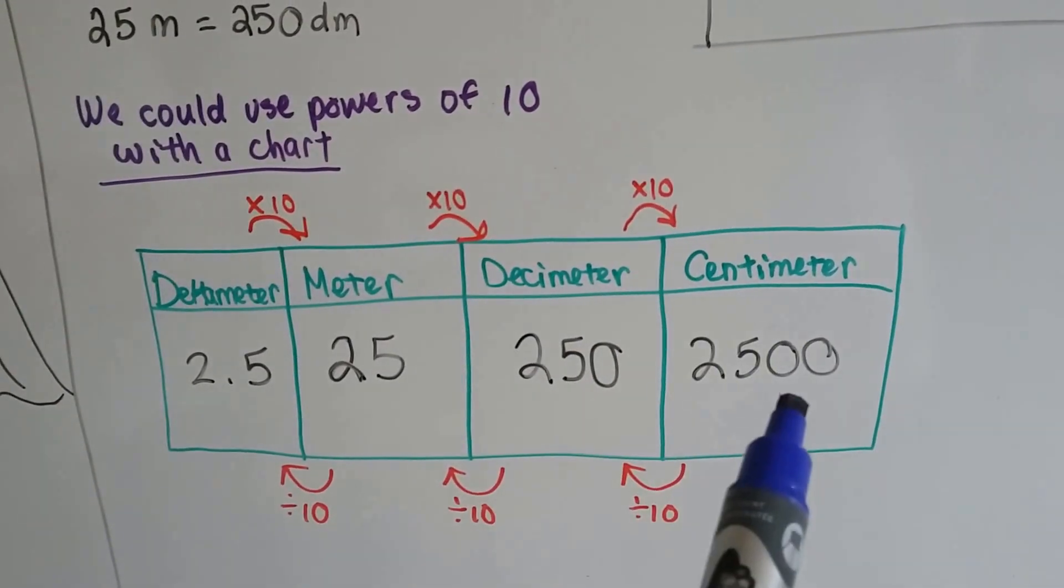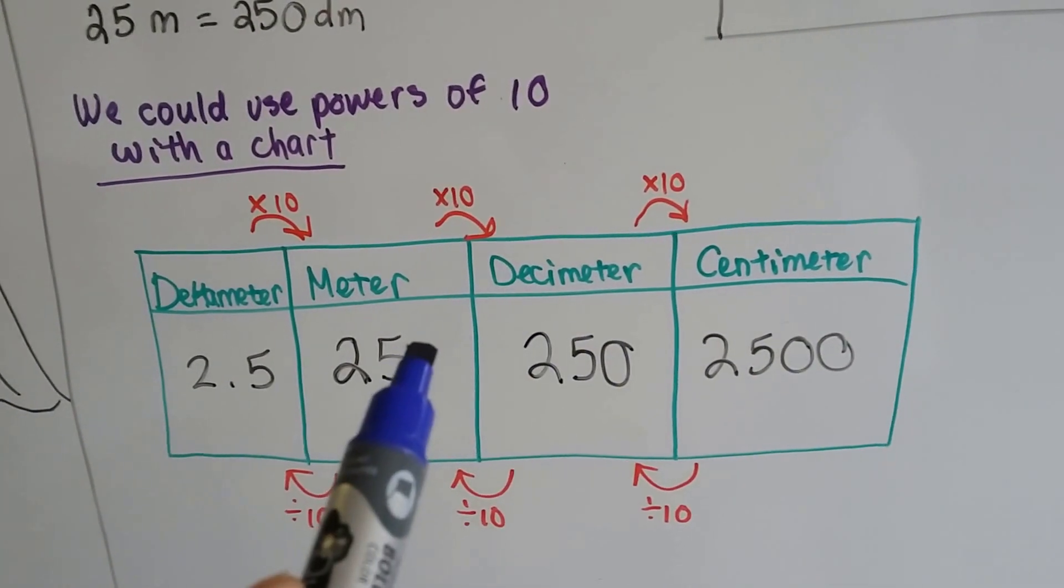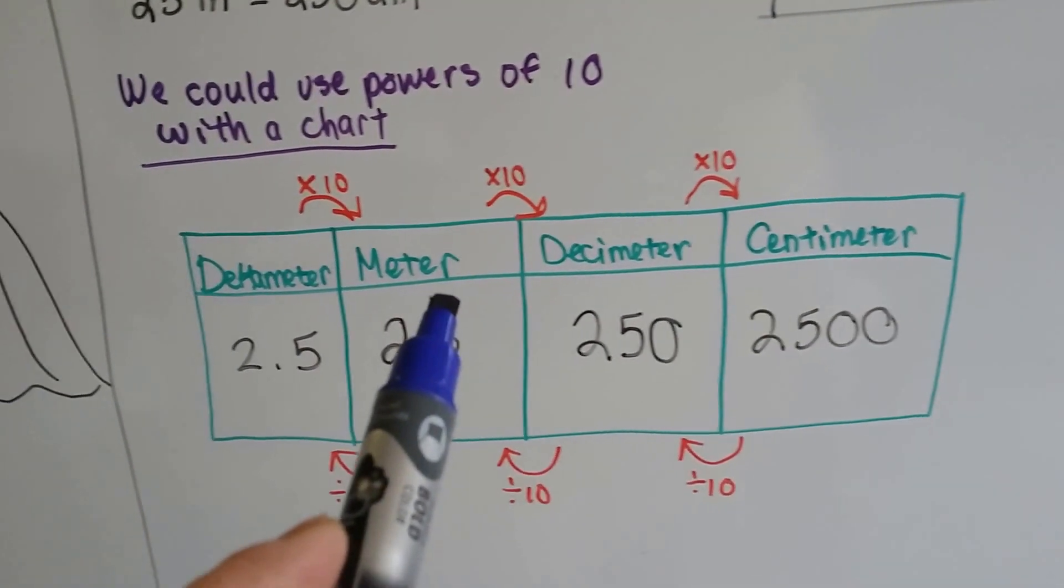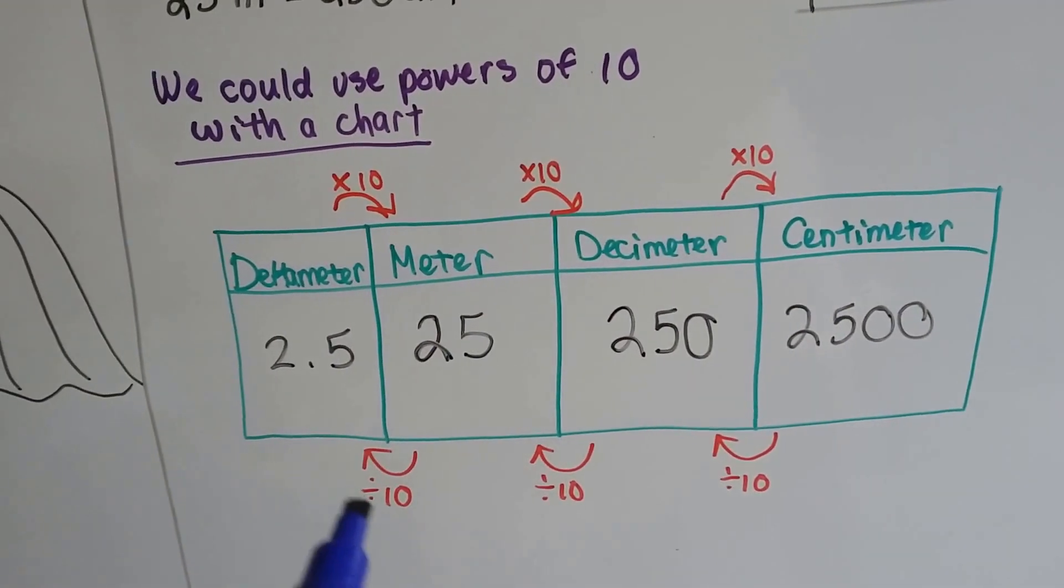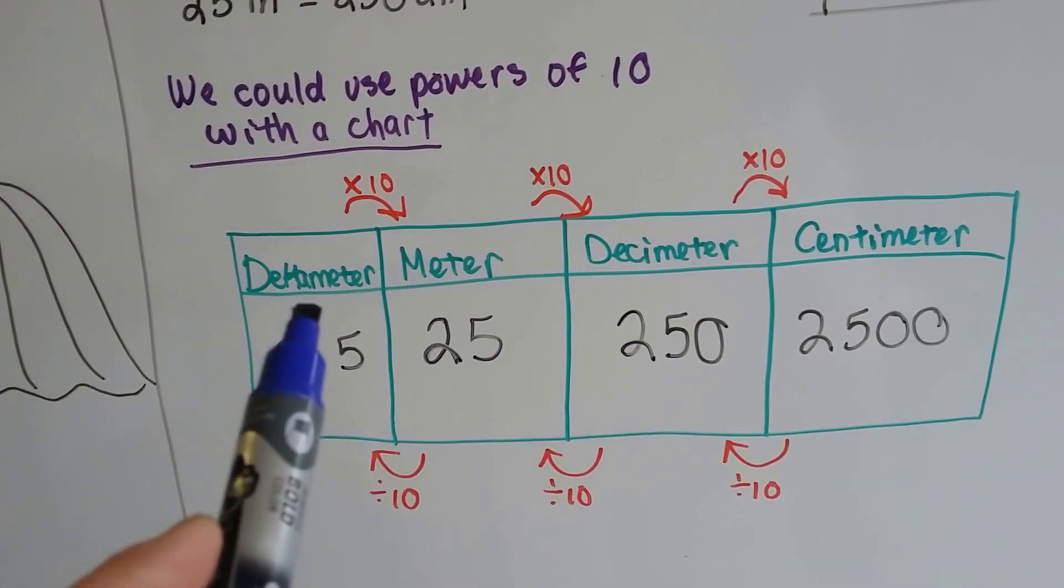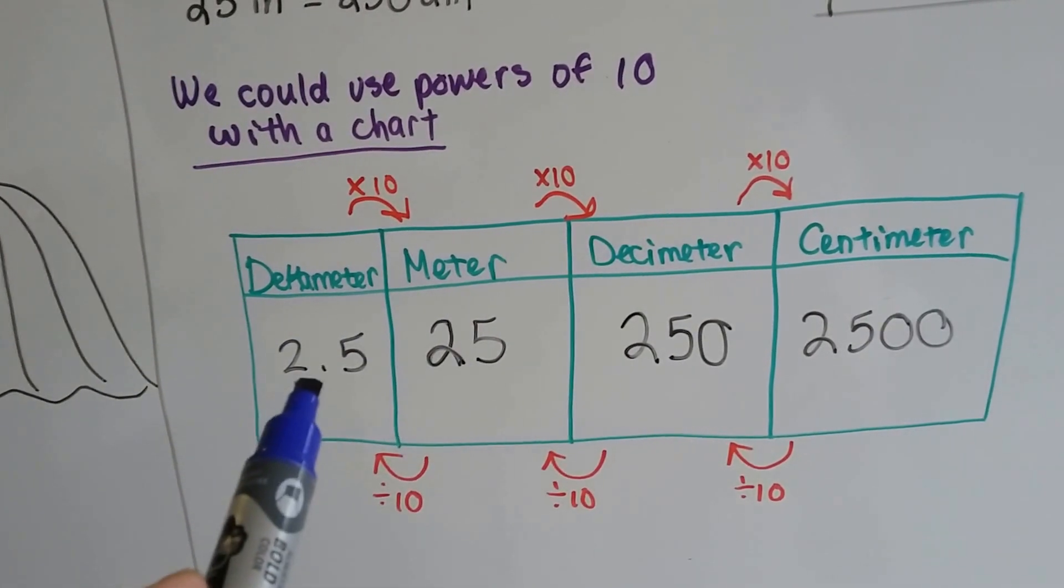We can see it would be 2500 centimeters. If we want to go to a larger unit, like a decameter, we would divide by 10. So 25 meters in decameters would be 2.5.